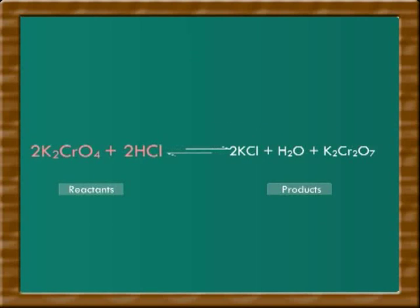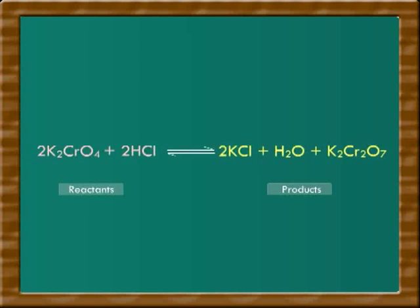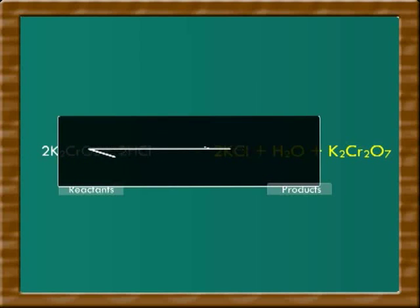Thus, we can say that in a reversible reaction, increase in the concentration of the reactants favors forward reaction. In a reversible reaction, increase in the concentration of the product favors backward reaction.